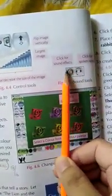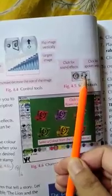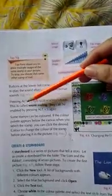You can increase or decrease the size of the image from here. The sound effects are if you click on the sound button you can have the sound effects. And if you want spoken words you can click on this symbol. If you press Alt+S then your sound effects will be disabled, which is called sound muting.